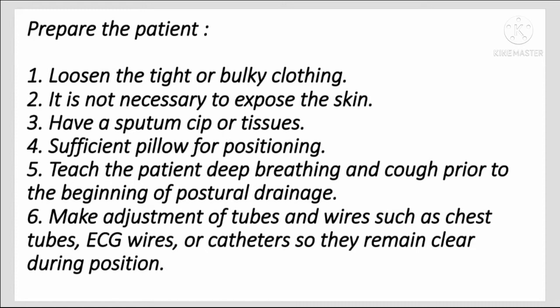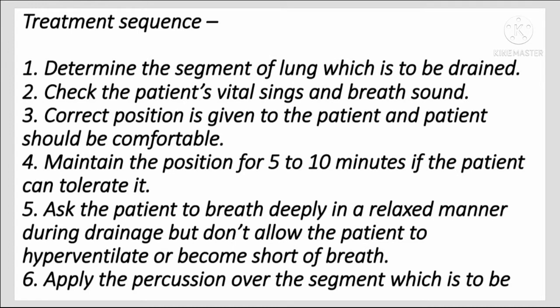Make adjustments to tubes and wires such as chest tubes, ECG wires, or catheters so they remain clear during positioning. Determine the segment of the lung to be drained and check the patient's vital signs and breath sounds. Place the patient in the correct comfortable position. Maintain the position for five to ten minutes if the patient can tolerate it. Ask the patient to breathe deeply in a relaxed manner during drainage, but do not allow the patient to hyperventilate or become short of breath.